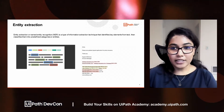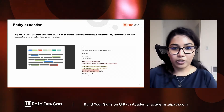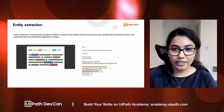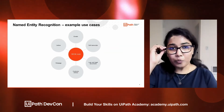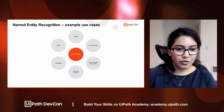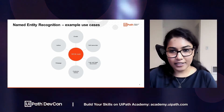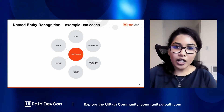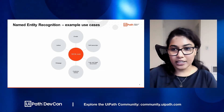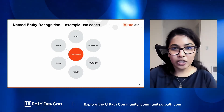You can define your custom entities and train your model to extract these — they are not predefined entities in any way. Some example use cases we've come across for named entity recognition models include emails, call transcripts, loan and legal documents, customer reviews, web pages, and letters. We extract details like who the email is from, what is listed in legal documents, and where an entity is placed in a web page.